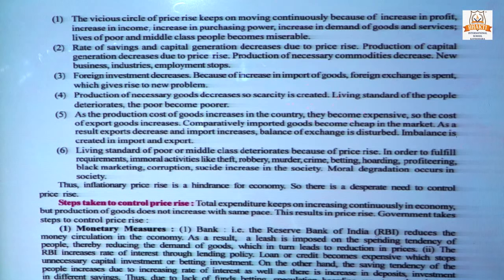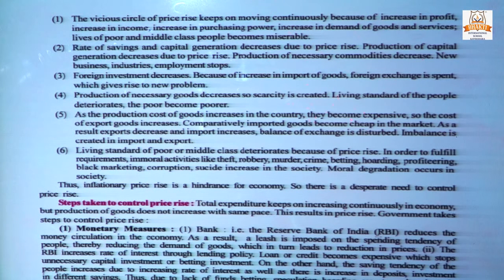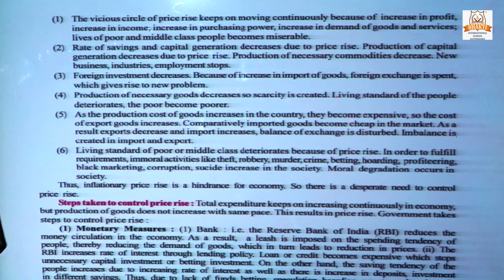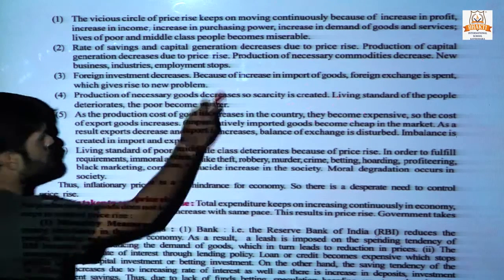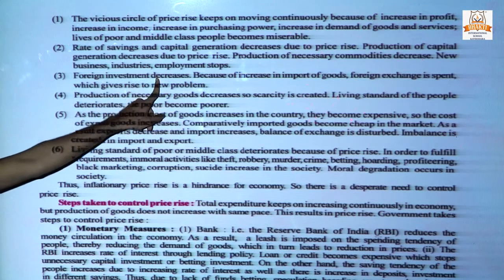Second effect: rate of savings and capital generation decreases due to price rise. Whatever production and capital income there is, it remains the same, but the purchasing capacity decreases. Everyone knows that whether onion costs 80 rupees or 20 rupees, the quantity is the same — but you now have to pay 80 rupees instead of 20 rupees. That is why it is written that capital generation decreases here.